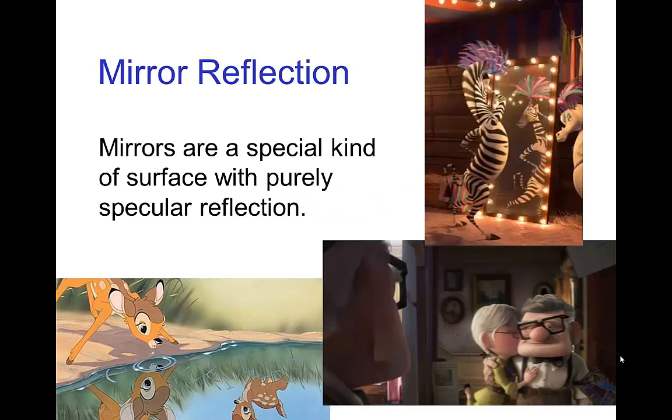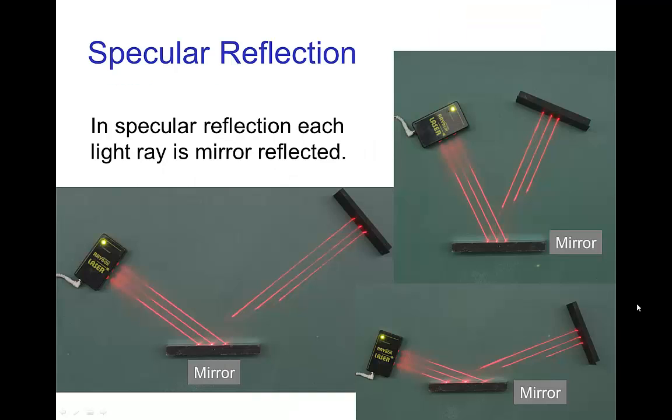Mirrors. Now mirrors are a special kind of surface that has a purely specular reflection, so no diffuse reflection. And we can see that demonstrated here where the laser beams are striking the surface, and the reflection is at a single angle and direction which changes depending on the angle that the incoming light rays strike the mirror.